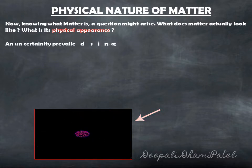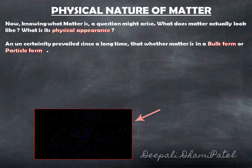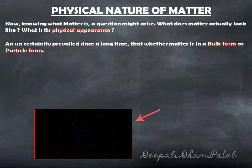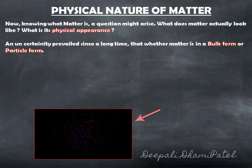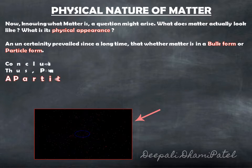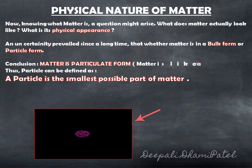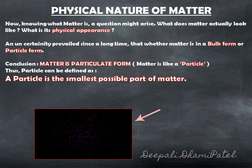There were lots of uncertainty prevailing for a long time about this question. Some scientists thought that matter is like a bulk form or like a log of wood, and some scientists thought that matter is like a particle form. After many activities and experiments and observations, they came to a conclusion that matter is a particulate form. That is, matter is like a particle.